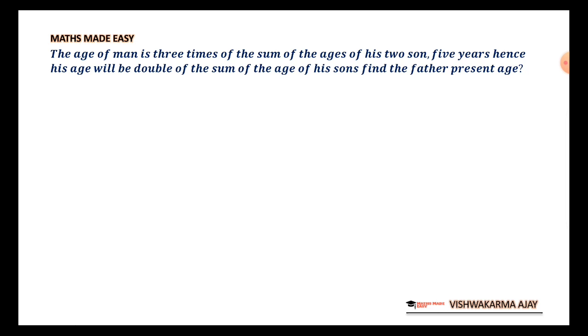Okay, our question says that age of man is three times of the sum of the age of his two sons. Five years hence, it means after five years, the age will be double of the sum of his son's age.